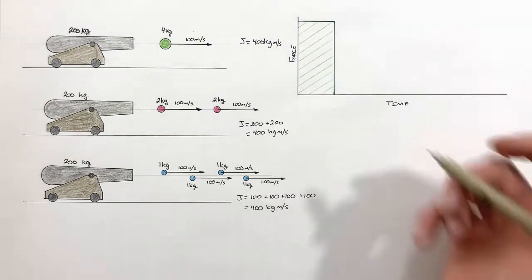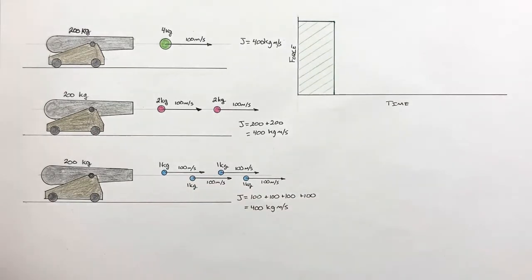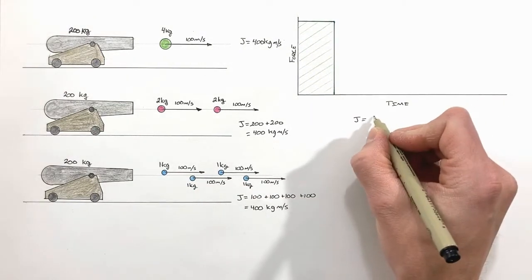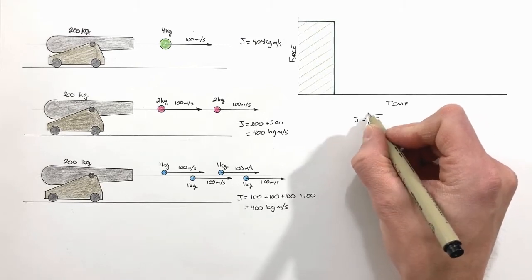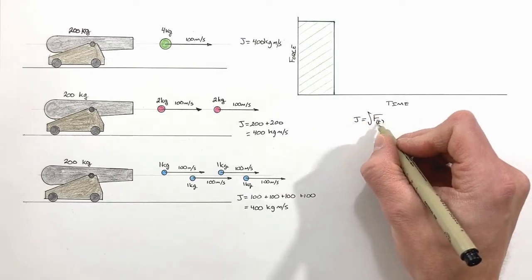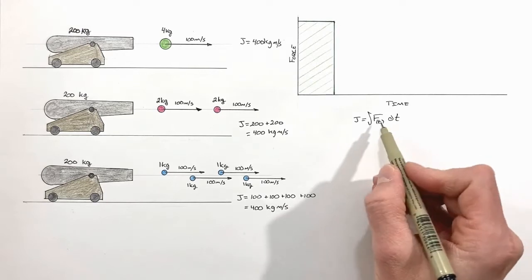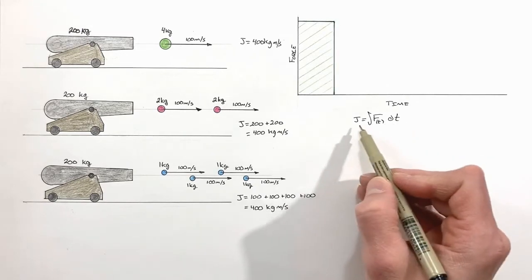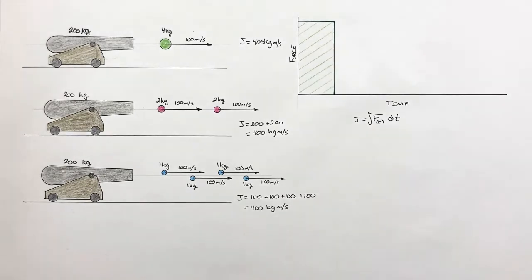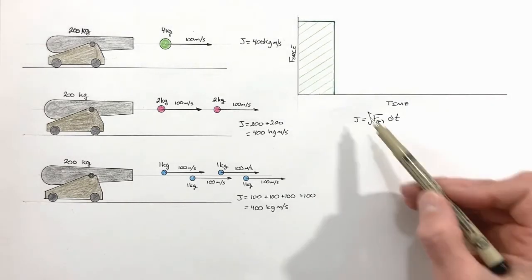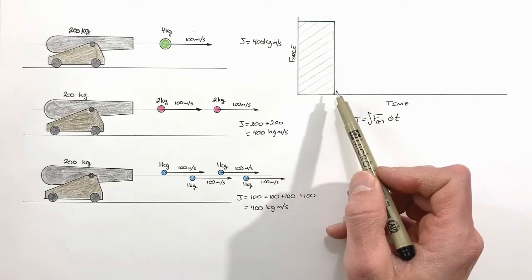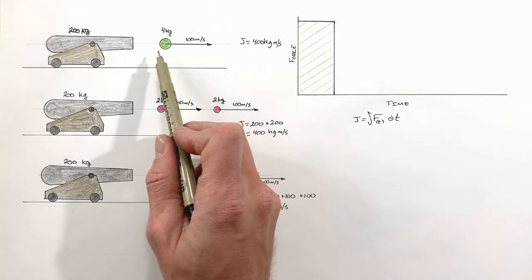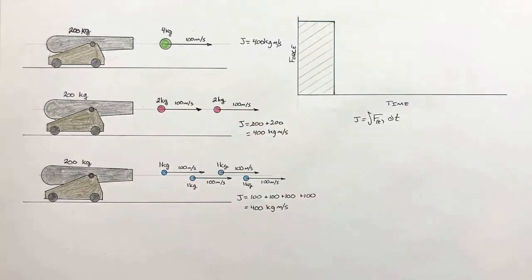Why am I talking about area under the curve? Because impulse is given by the integral of F(t) dt — if we integrate force as a function of time with respect to time, that gives us impulse. The area under a force versus time graph is the total impulse, or change in momentum. So we've got an impulse of 400 kilogram meters per second.